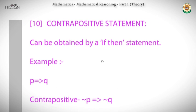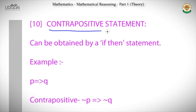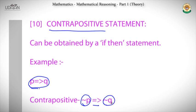Do not confuse contrapositive with converse. The contrapositive of a statement p implies q is: if not q, then not p. Simply put, if one thing is not happening then the other will not happen either. That is the basic sense of contrapositive.